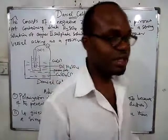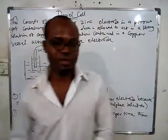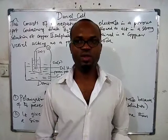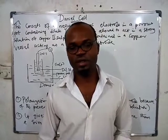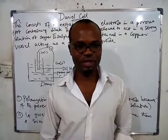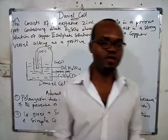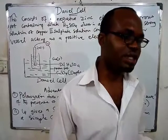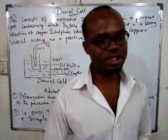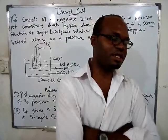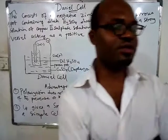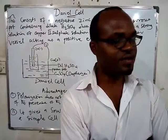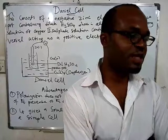Hello, welcome. Today we are going to be looking at the Daniel cell. Yesterday we started our classes on electric cells. An electric cell is similar to our battery — the battery you use in your phones, in the car, in your touch lights. They are made up of electric cells. We have two classes of cells: primary cells, which run out easily, and secondary cells, which last long and can be recharged, like the ones in your car or phones.